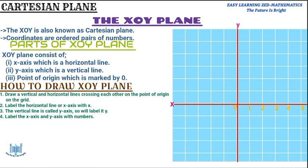Now I'll label the negative numbers on the left side of the Y axis: negative 1, negative 2, negative 3, negative 4. Be careful not to start labeling from the left — you must start from the point of origin and go to the left when labeling the negatives.